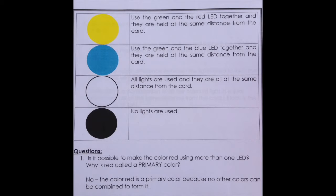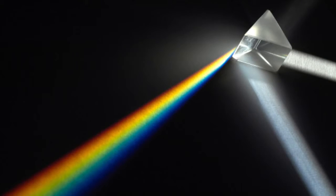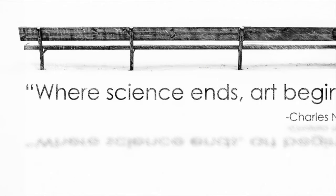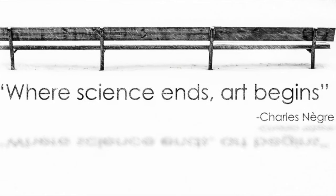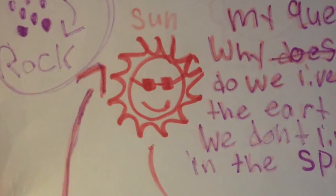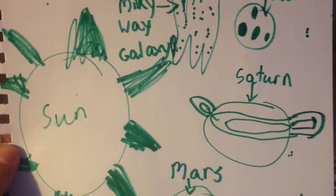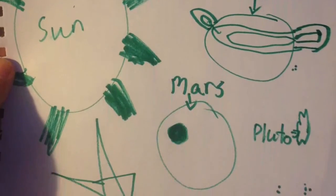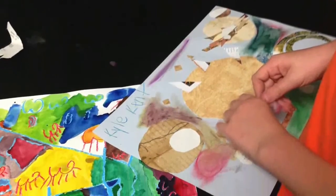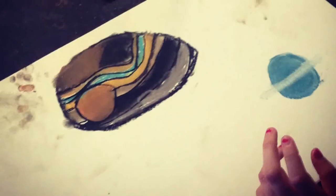Being an art teacher and seeing red, green, and blue light make white is amazing. Seeing green and red make yellow really does tickle my brain and completely changes the way I see the world. Charles Negre said, 'Where science ends, art begins.' But I believe the connection is more integral. What we know from science affects how we see the world and interact with it, and what we create in art helps share our understanding. So rather than saying where science ends, art begins, I think it's more accurate to say: where there is science, art can be found.